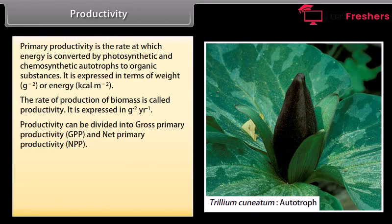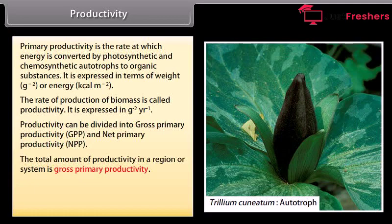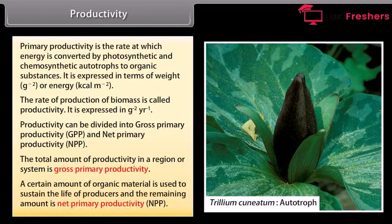Productivity is expressed in per gram square per year. Productivity can be divided into gross primary productivity, GPP, and net primary productivity, NPP. The total amount of productivity in a region or system is gross primary productivity. A certain amount of organic material is used to sustain the life of producers, and the remaining amount is net primary productivity.